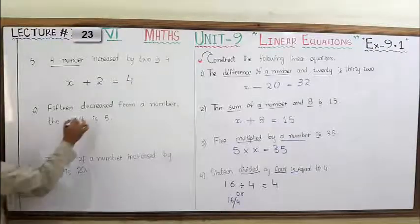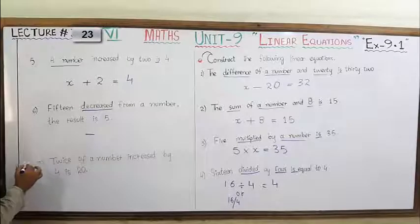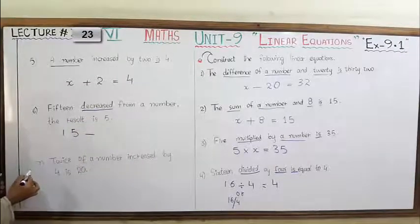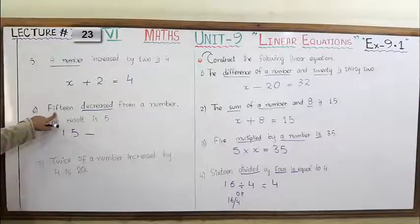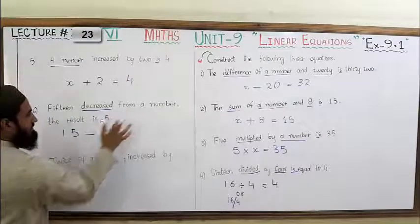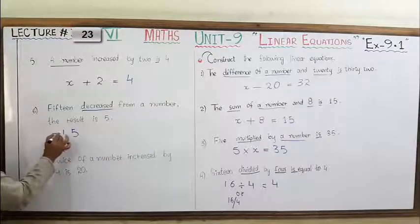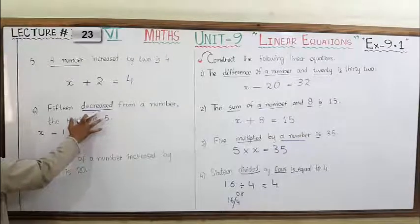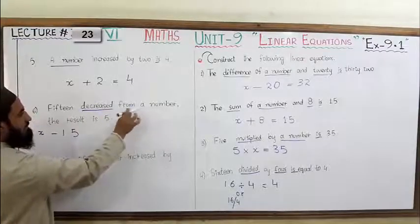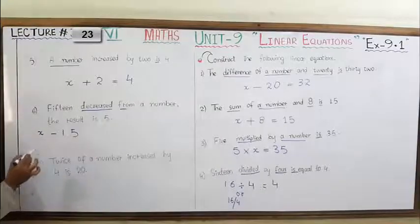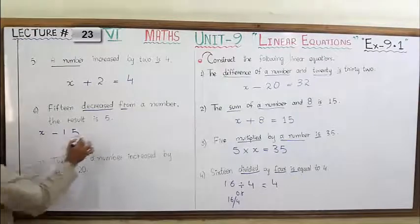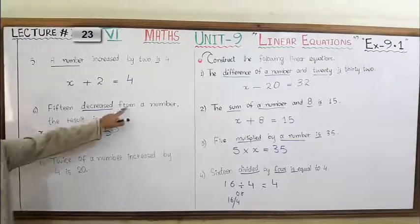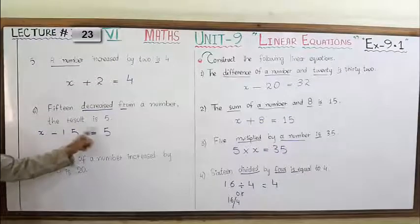Chhatha statement: '15 decreased from a number is 5.' Decreased — minus ki sign ke liye. 15 ko as it is utar denge. 'From a number' — 15 jo hai wo decrease ho raha hai, minus ho raha hai, from a number — ek number mein se. To 'from' ka matlab ho jaayega 'mein se', isliye sign pehle aayegi aur us number ko X se show karenge — to likhenge: X - 15 = 5. Agar yahan 'from' nahi aata, to phir hum X baad mein likhte: minus 15 = 5.